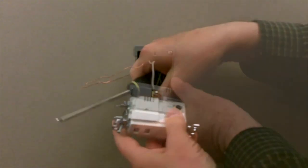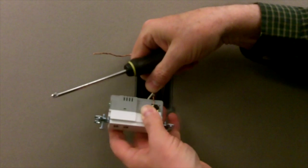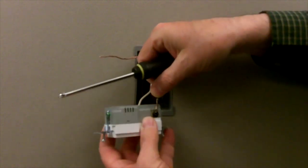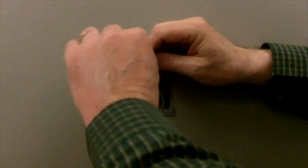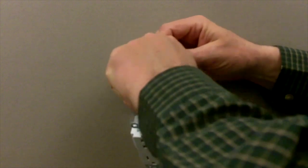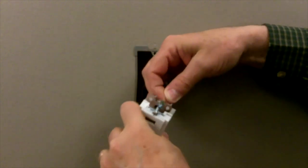Connect the wires to the device. Neutral to the silver terminal screw, hot to the black terminal screw, and your ground wire to the green ground terminal screw. The terminal screws should be torqued to 12 to 14 inch-pounds.